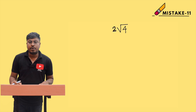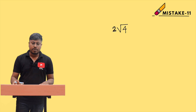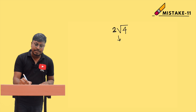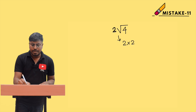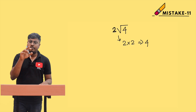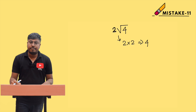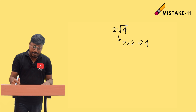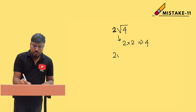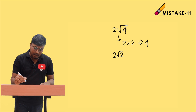Consider 2 times the square root of 4. What is the answer? The square root of 4 is 2, and we already have 2 outside, so 2 times 2 equals 4. That is the correct answer.